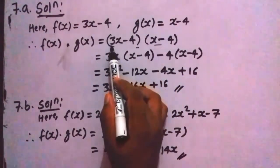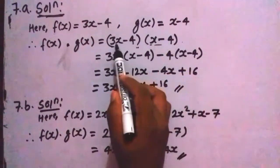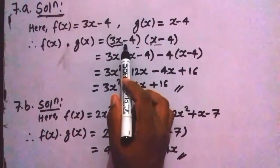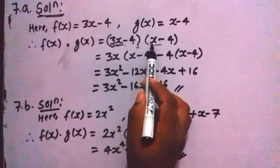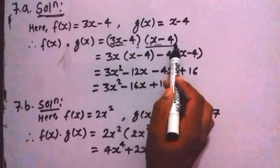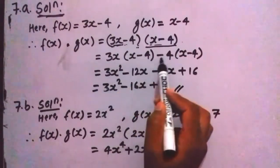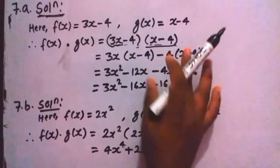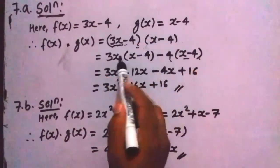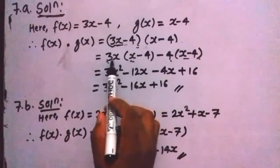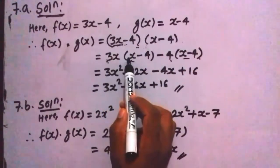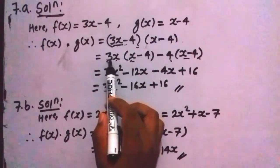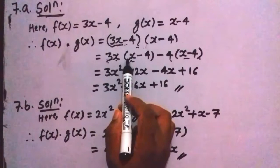To multiply, at first we have to multiply the whole second polynomial with 3x, then again with minus 4. This minus 4 is written here, and x minus 4 is written here. When multiplying, we have to multiply coefficient with coefficient and variable with variable. Your coefficient is 3 and your coefficient is 1.